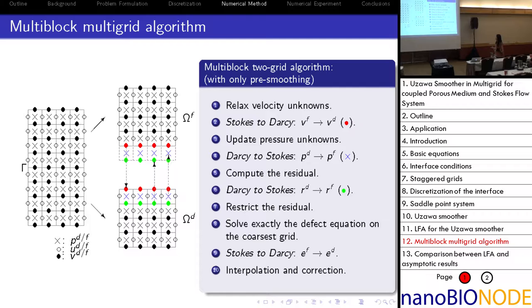With all this information, the multi-block multigrid algorithm is as follows. During the smoothing steps, all velocity components are updated first before the pressure unknowns are relaxed. The coupled domain is divided into two parts corresponding to the porous media and the Stokes region. Communication between these two blocks is necessary, and the Stokes region is extended by an overlap region.